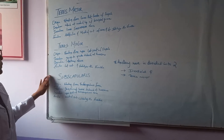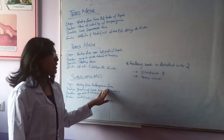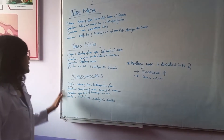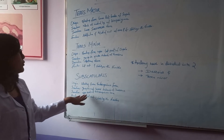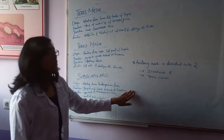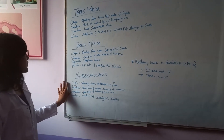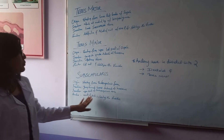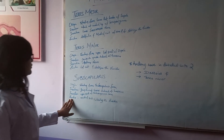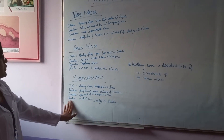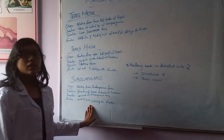The subscapularis originates from the subscapular fossa and inserts at the lesser tubercle of the humerus. Its innervation is the upper and lower subscapular nerves. Its function is medial rotation, and it stabilizes the shoulder joint.